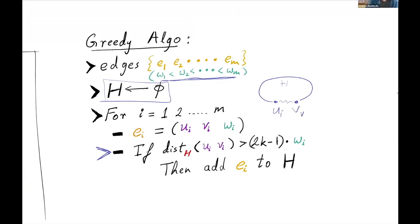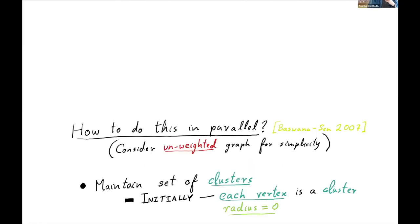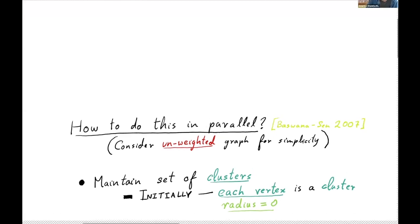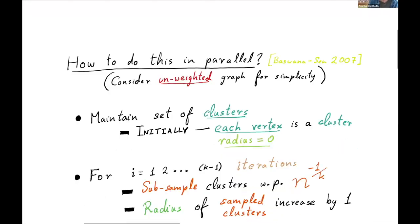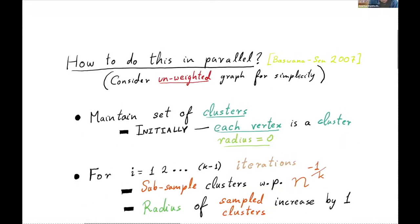For the rest of this talk, I'll focus on the parallel algorithm for this problem. Specifically, I'll be talking about an algorithm of Baswana and Sen — a classic algorithm from 2007. They provide a parallel algorithm with depth of k, so essentially the depth equals the stretch of the spanner. The algorithm starts by assigning each vertex to be its own cluster, and then these clusters both grow and die off.